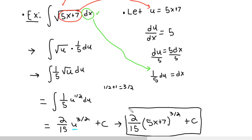And that's all there is to it. That's one golden rule to remember: don't forget to plug the x's back in. Don't leave your answer as 2/15 u to the 3/2 plus c. Because we started with x's, our answer must be in terms of x's. Something my old professor once said is: I used u to get back to my x. That's a silly way to remember it, but it helped me when I first learned it.